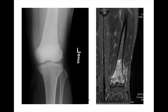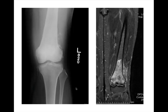Osteosarcomas love to occur around the knee — the distal femur is a favorite site. They'll be geographic lesions but will have scary features such as a wide zone of transition, cortical breakthrough, and aggressive periosteal reaction. When you see something like this, osteosarcoma is something you want to think about. The MR in this case is really just for staging to show us the extent of the tumor — we should be able to say something smart based on the radiograph alone.